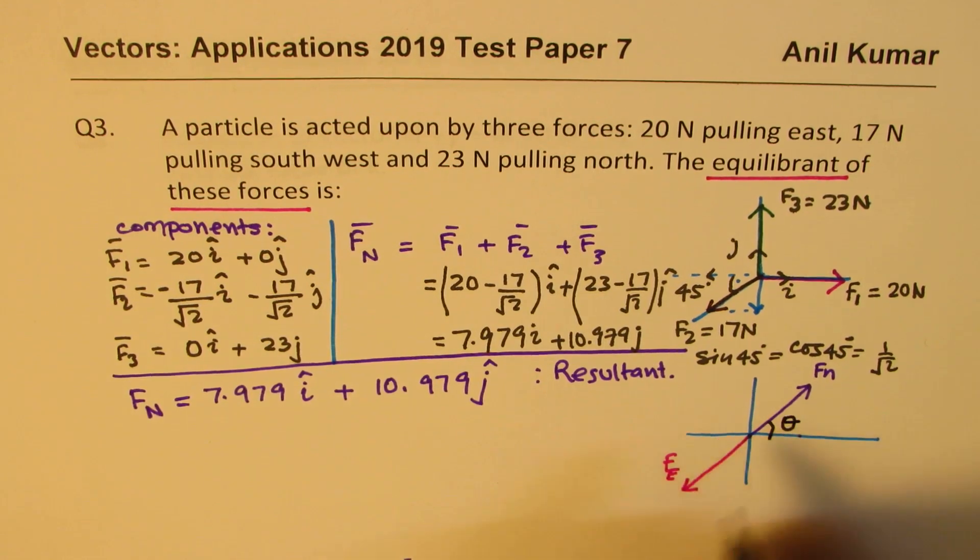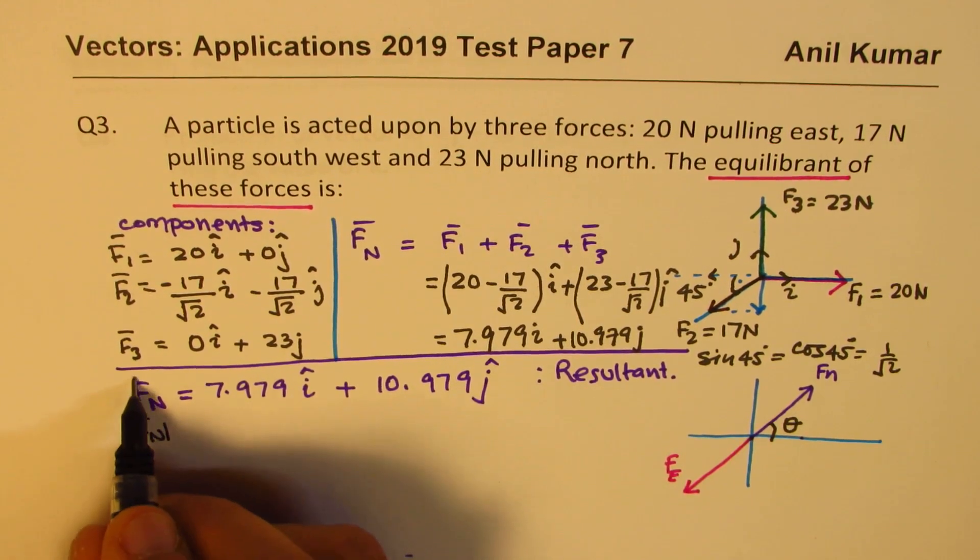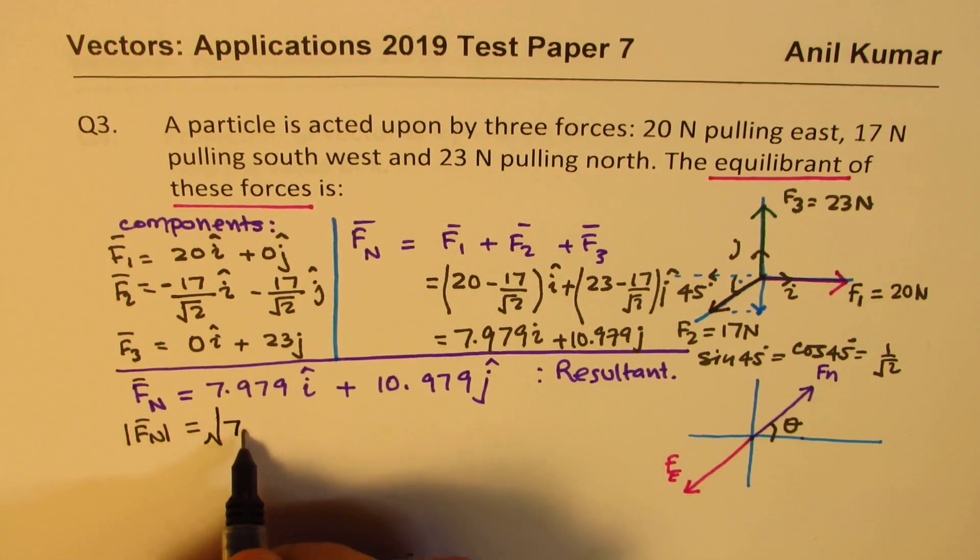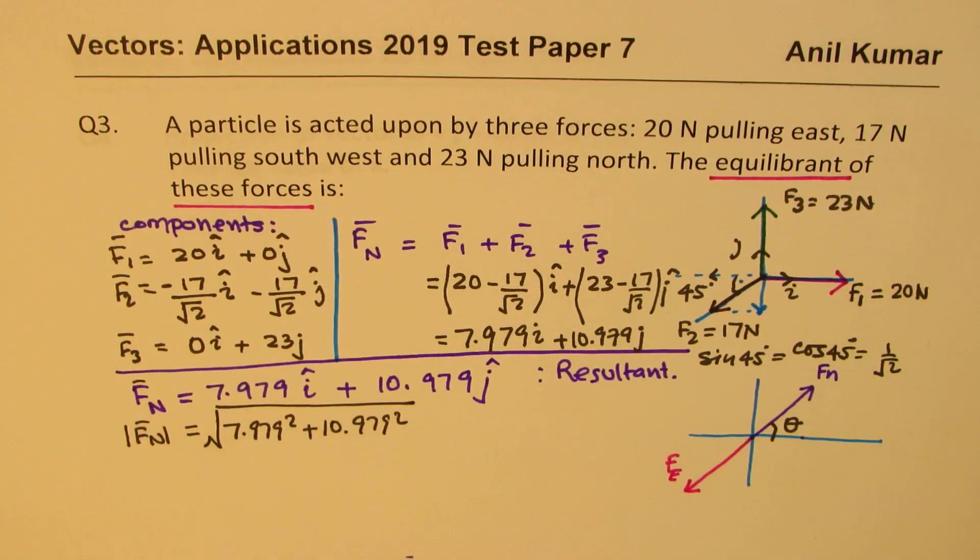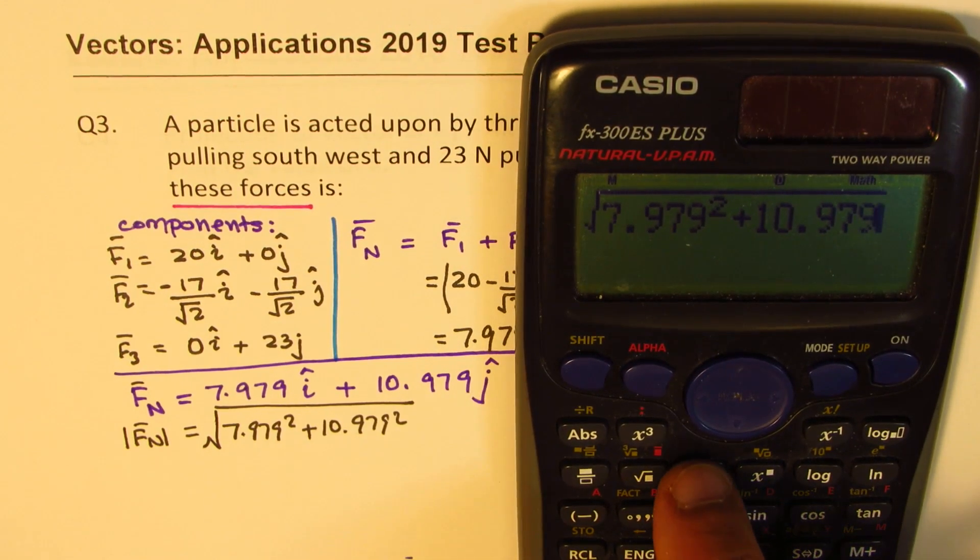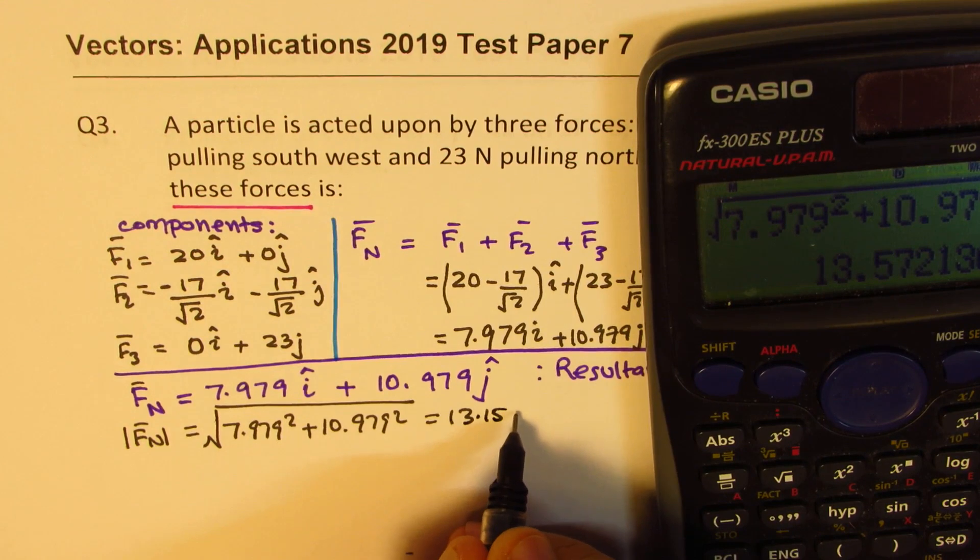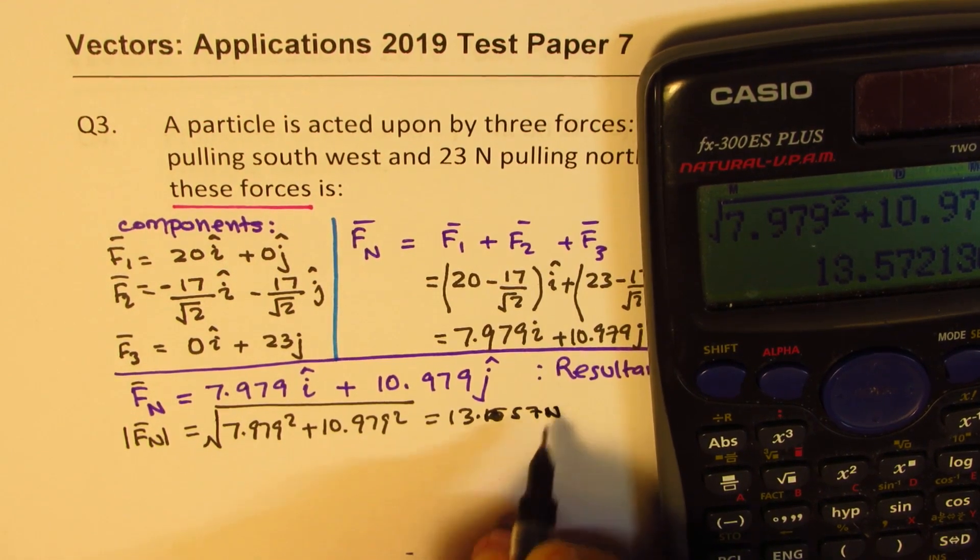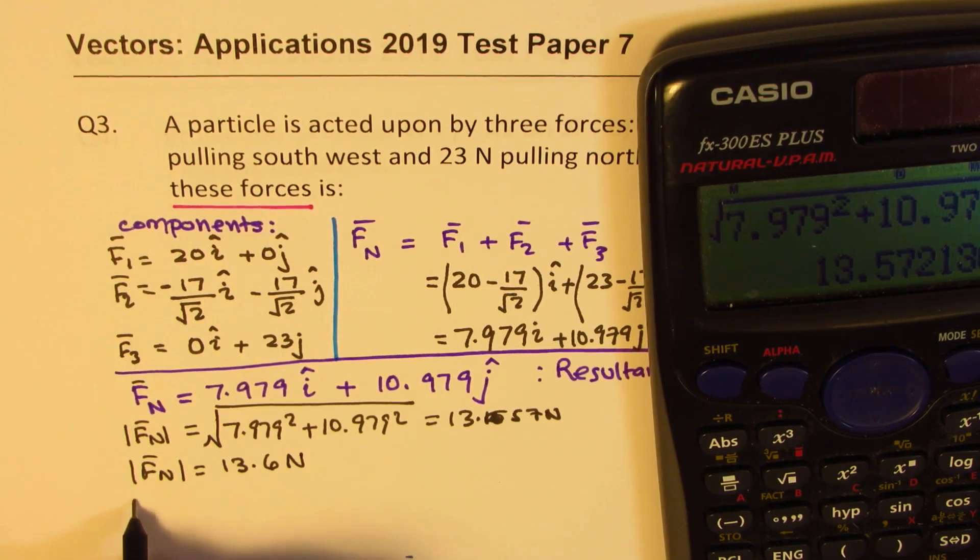Now, let's first find the angle theta here, which the resultant makes, and also the magnitude. So what is the magnitude of this force? The magnitude of this force is square root of 7.979 square plus 10.979 square. So that is equal to 13.57 Newtons. So let's write the magnitude of this force as 13.6 Newtons.